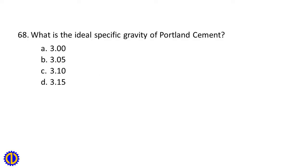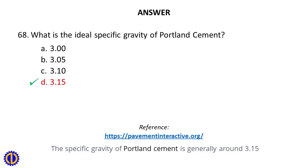Question 68. What is the ideal specific gravity of Portland cement? A. 3.00, B. 3.05, C. 3.10, D. 3.15. Answer: D. 3.15. Reference: PavementInteractive.org. The specific gravity of Portland cement is generally around 3.15.